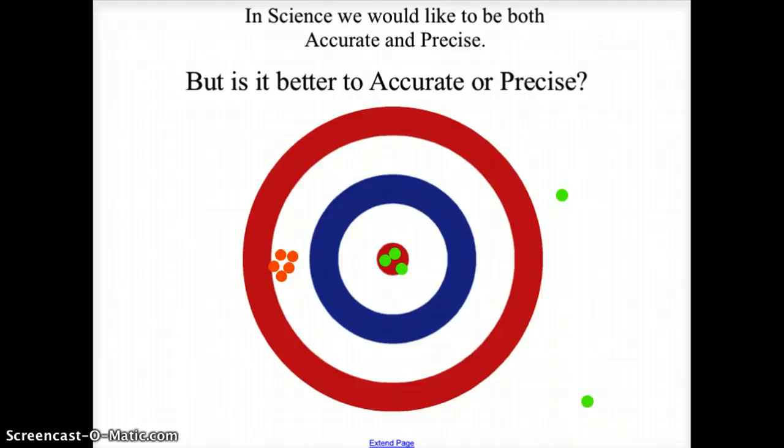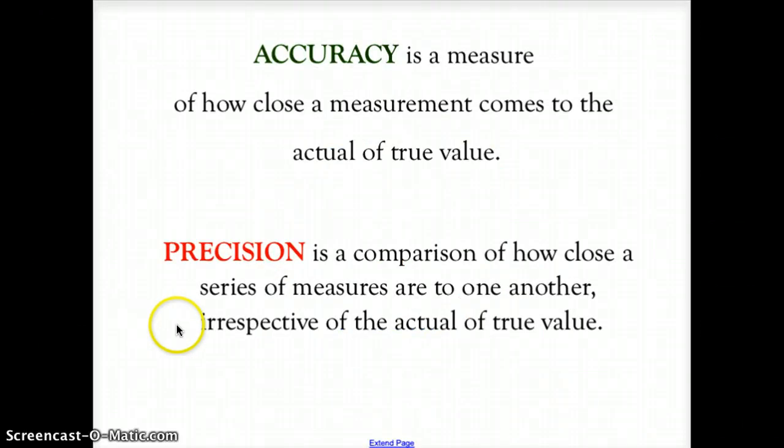So what determines accuracy and precision? Well, accuracy is a measure of how close a measurement comes to the actual or true value, while precision is a comparison of how close a series of measures are to one another, irrespective of the actual true value.